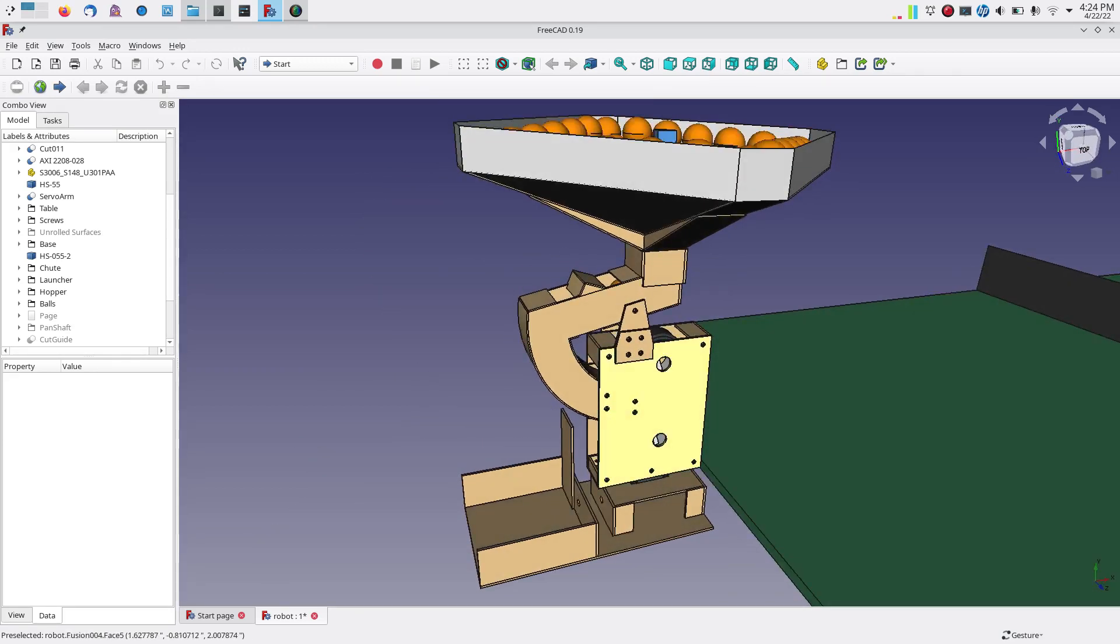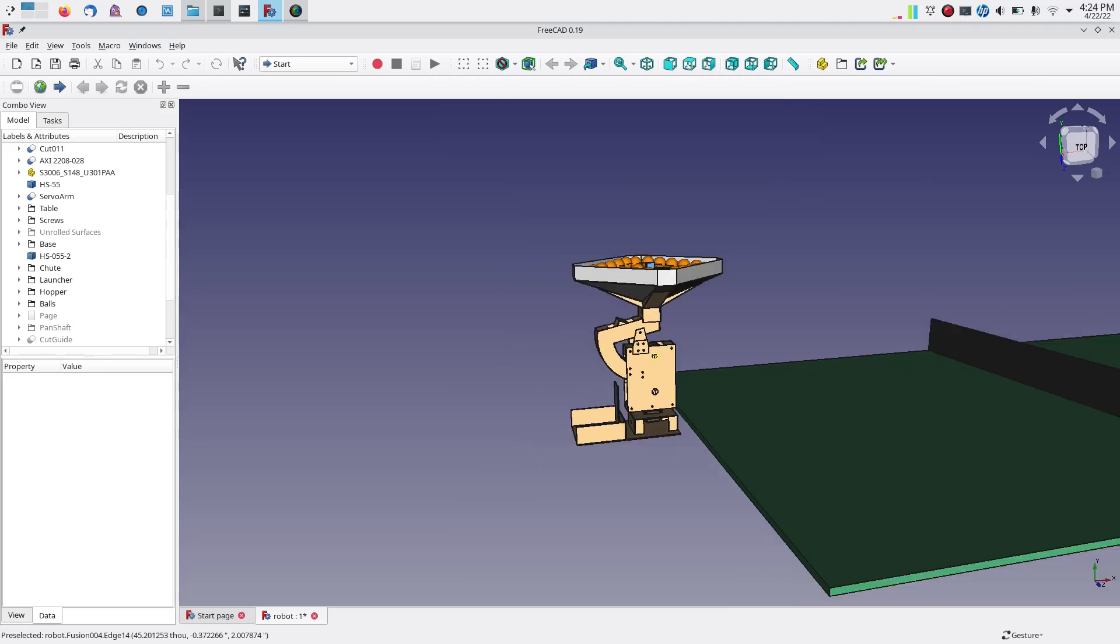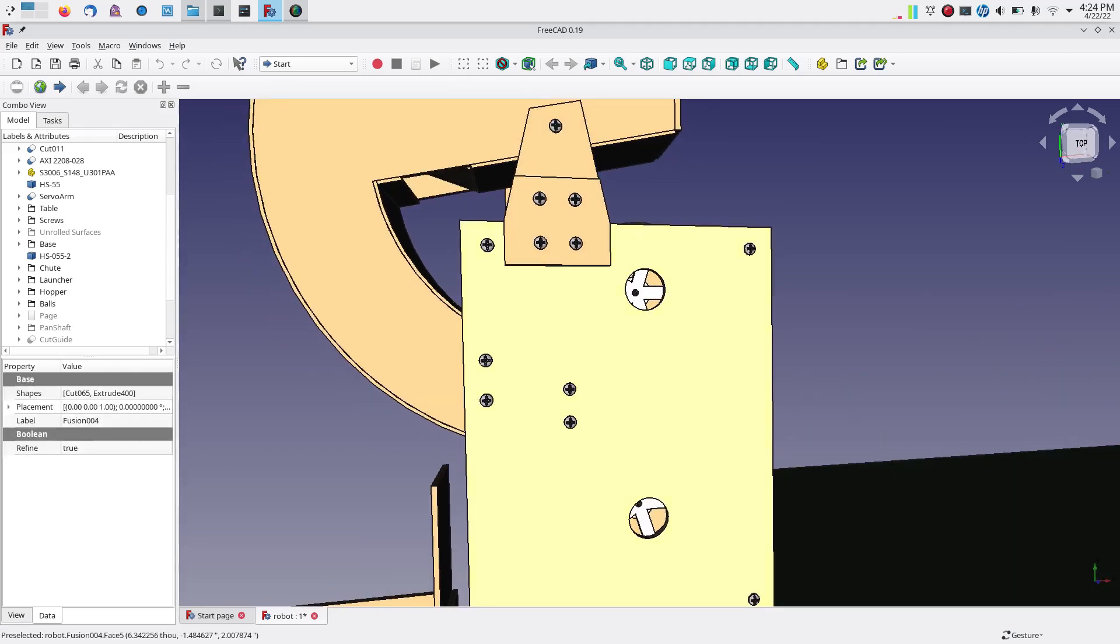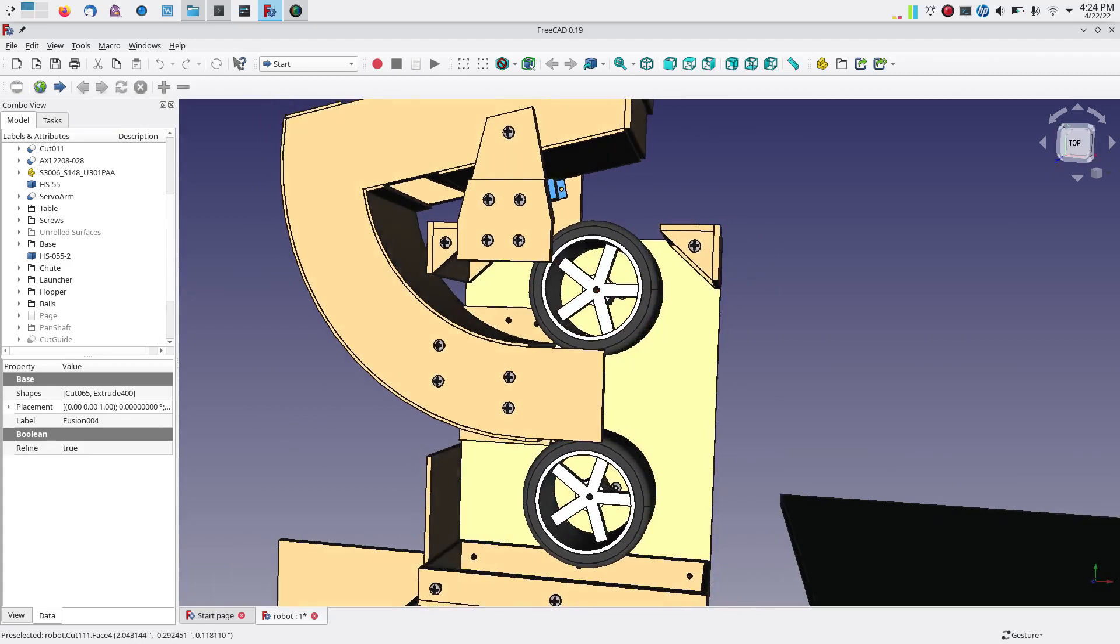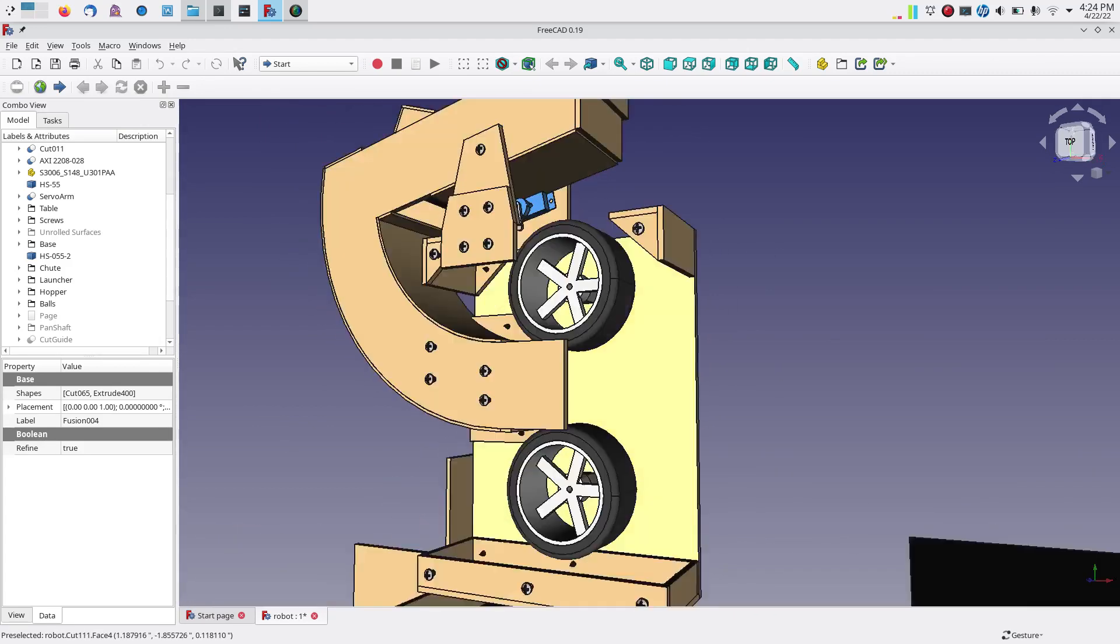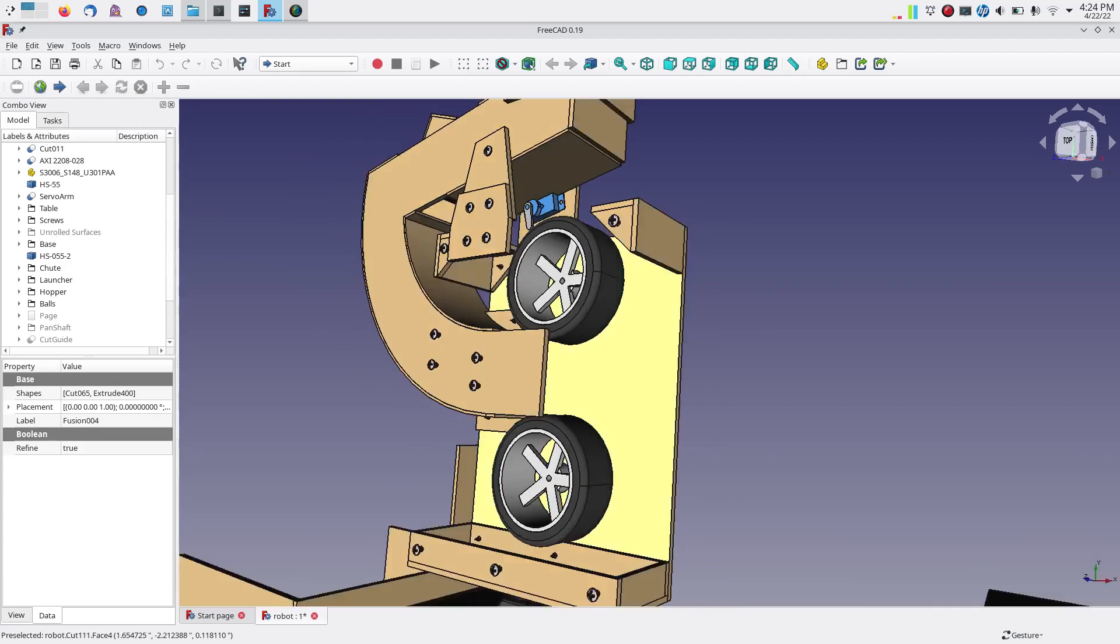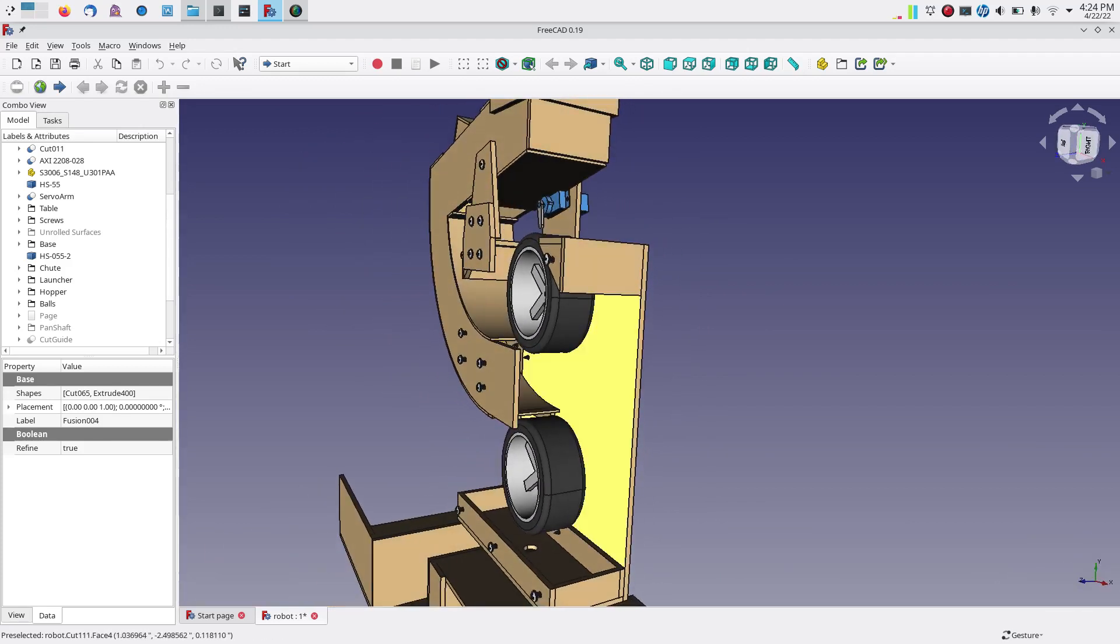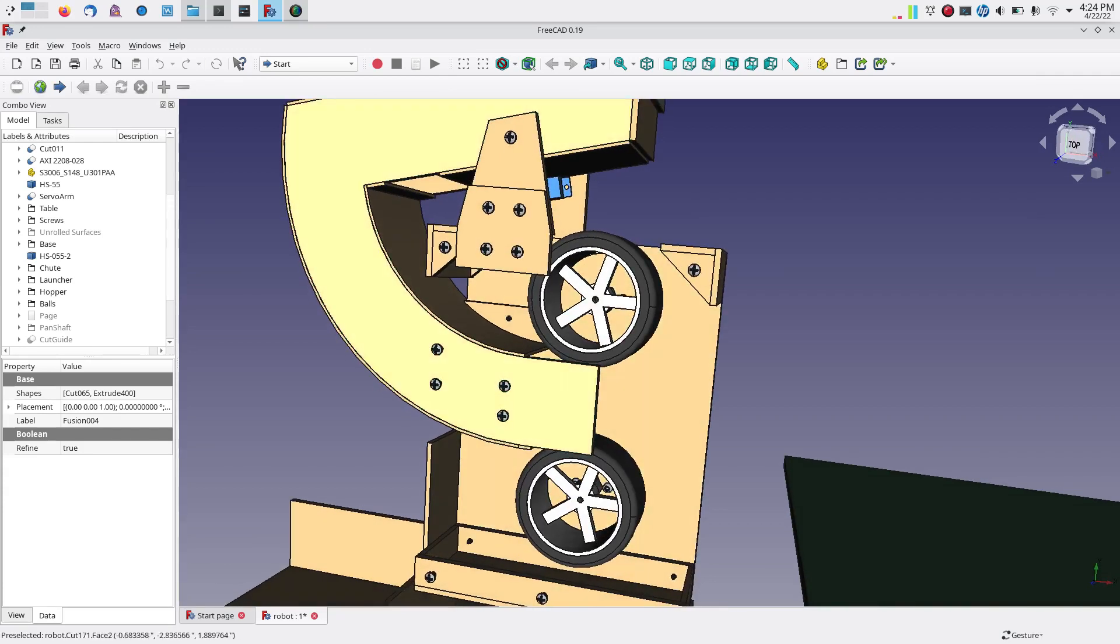So the basic concept of this thing is if you've ever used a baseball pitching machine, it's a very similar idea. I have two wheels that spin, and as the ball comes down through this curved chute, the wheels will shoot the ball forward.